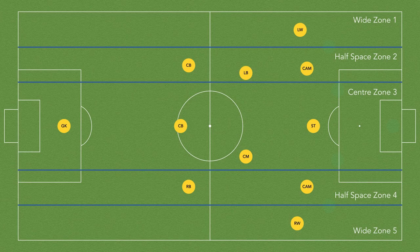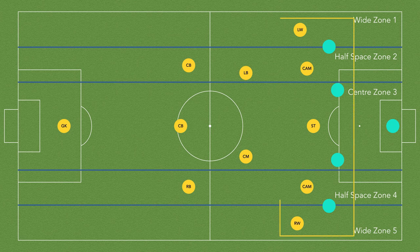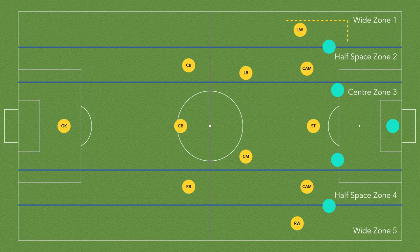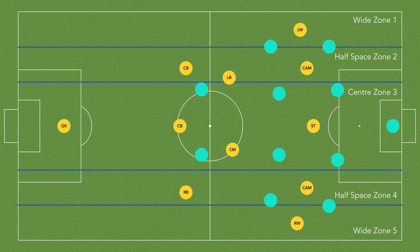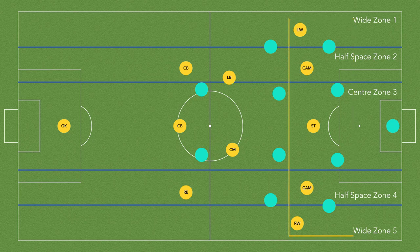The main reason a team uses this shape is because they are searching for a numerical advantage. With 5 players in attack against most 4-player defences, the team will have a numerical advantage with 1 extra player in their attacking line. We can break this down even further and see the 2v1s and 3v2s that this shape has created. By using 5 players in attack, you will create lots of opportunities to ask questions of an opposition's defensive unit.